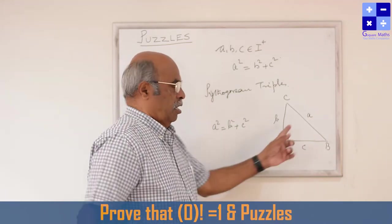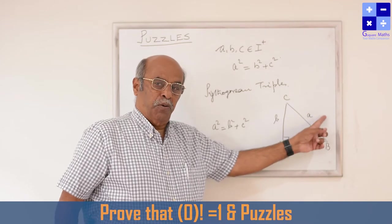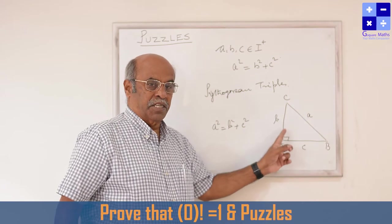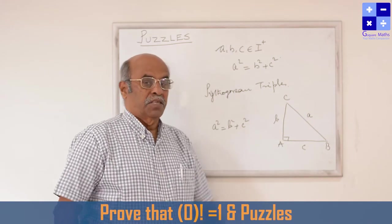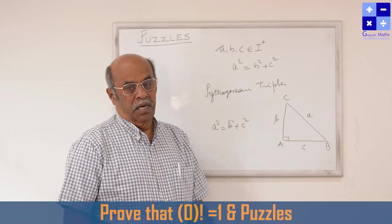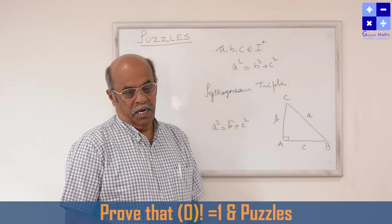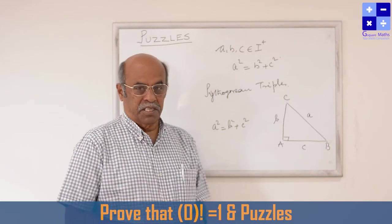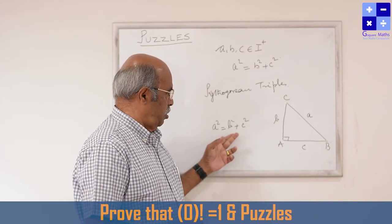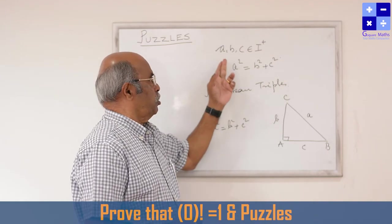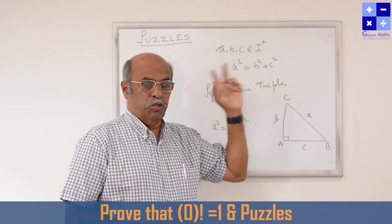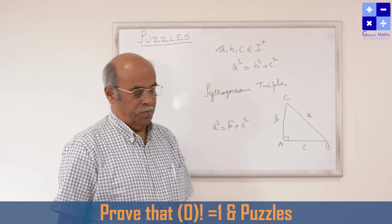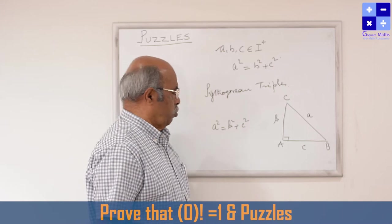Let me repeat once again. In a right angle triangle, the square of the hypotenuse, that is a², is equal to the sum of the squares of the other two sides which contain the 90 degree. This is a simple and very standard theorem in geometry. Usually, at the end of the secondary section — the 10th or 9th grade — children study this. That is often confused with the Pythagorean triples, which you may have studied along with the number system in lower classes, 6th, 7th, and 8th.